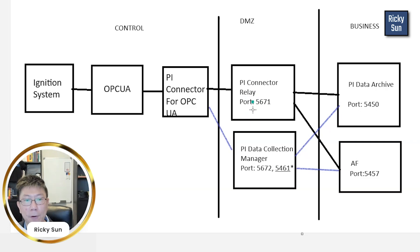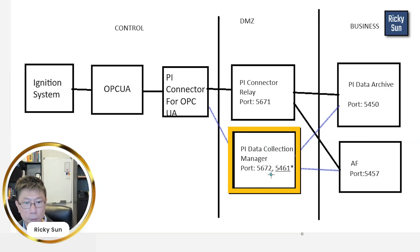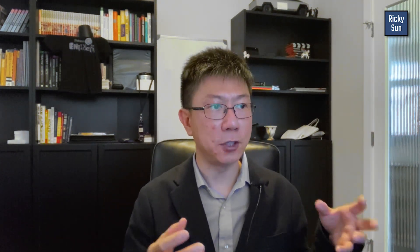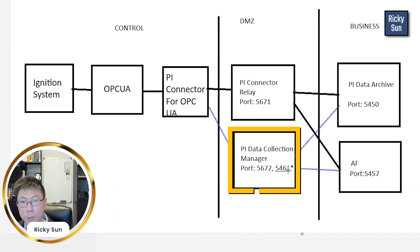There are three ports you need to open. I installed both of these software on the same machine. I need to tell IT that port 5671 needs to be open because it is listening, and then 5672 for PI data collection manager. Also this custom port, 5461 — it can be something else for you when you install PI data collection manager, so this is customizable. You need to tell IT you need this port to be open.